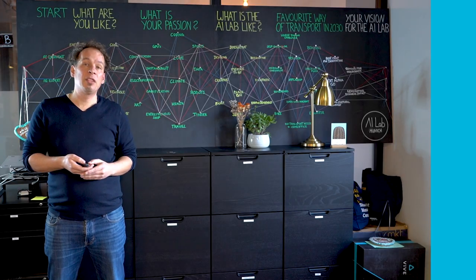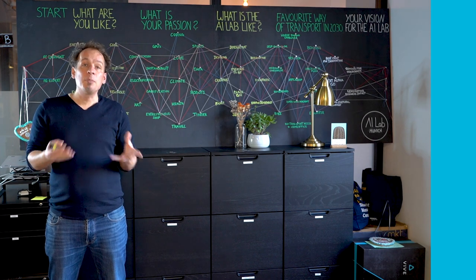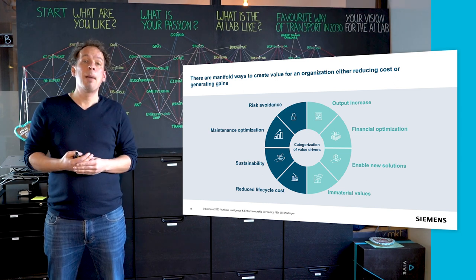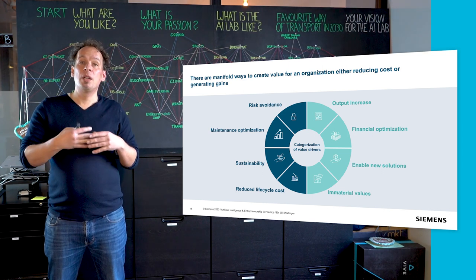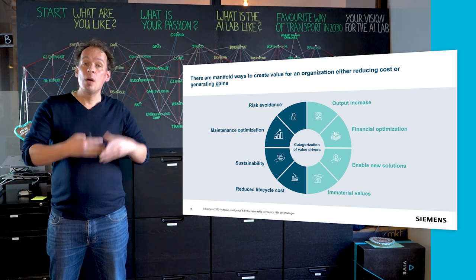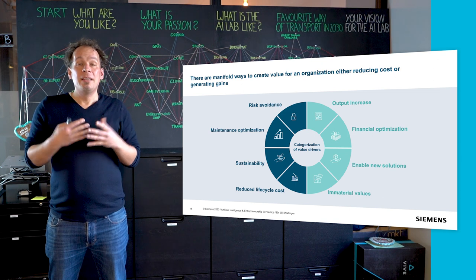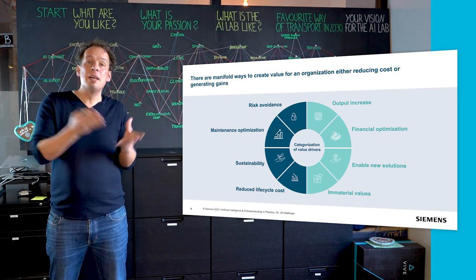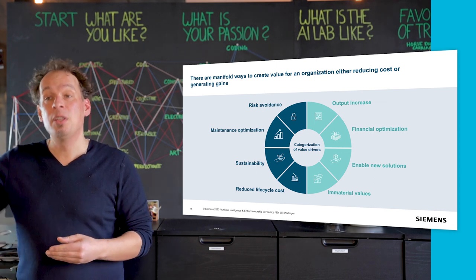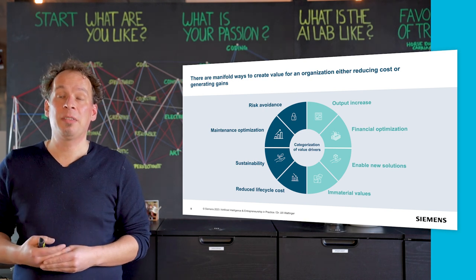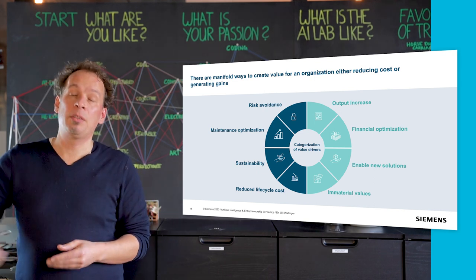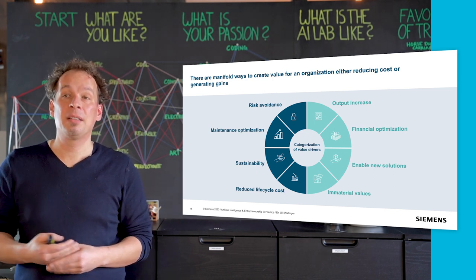Last but not least, you can equip this in typical organizational value creation. We talk about reducing costs — like risk avoidance, maintenance optimization, sustainability as a leading paradigm in corporates, or reducing lifecycle costs. These cost-reduction optimizations come with a natural limit. Generating gains on the other side is much broader in scale: output increases, producing more products, enabling new services, inventory value improvements, or financial optimization. You will always compare reducing costs and generating gains in your value proposition towards the pricing and value assessment of scale in AI.